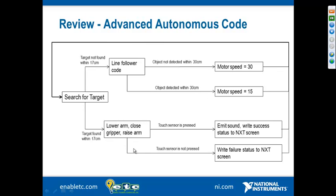There are other branches in the flowchart: if the touch sensor is not pressed — meaning the object failed to be picked up — it writes a failure status to the screen and loops back to target searching. If there is no target within 17 centimeters, it follows the standard line follower code, turning right or left depending on whether you're on the line. A modification slows the robot to a speed of 15 if an object is within 30 centimeters, and runs at speed 30 if no object is detected. This builds on the original line follower code by adding variable speeds, arm actuation, gripper control, and touch sensor verification.